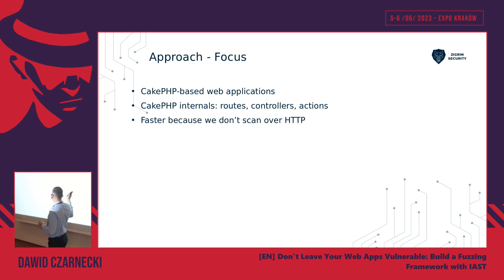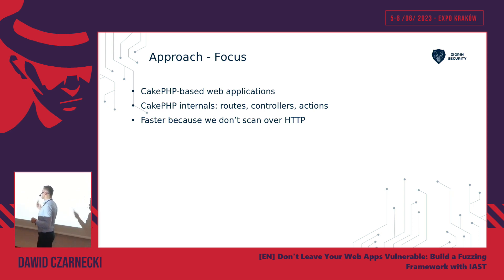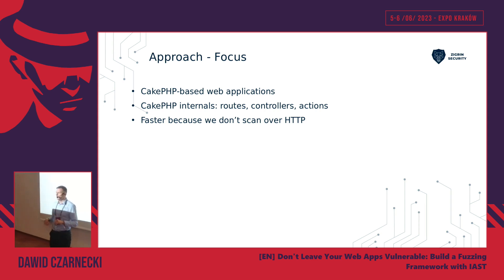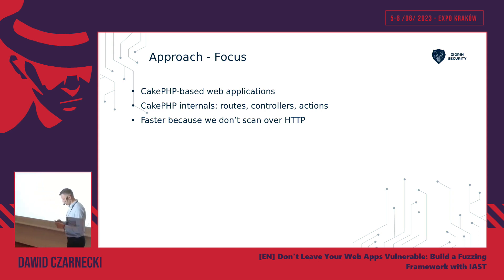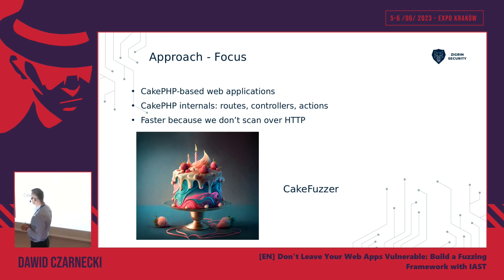Moreover — and this is the part where we used the WP Garlic approach from Krzysztof Zajonck — we don't scan over HTTP. We could, but we used an approach that helped us discover oddly-looking input user parameters using a method I'll show in a moment. Because the primary framework we were targeting was CakePHP, we named our solution CakeFuzzer.